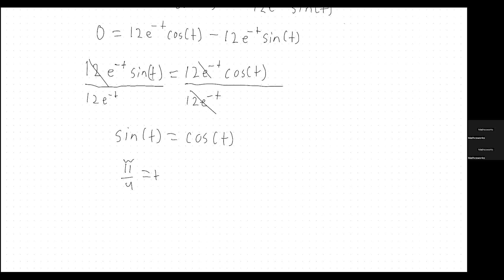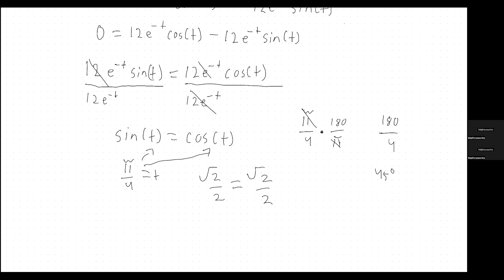So t equals pi over 4. At pi over 4, sine of pi over 4 equals radical 2 over 2, and cosine of pi over 4 equals radical 2 over 2. To verify that pi over 4 equals 45 degrees, multiply pi over 4 by 180 over pi — the pi's cancel, leaving 180 divided by 4, which equals 45 degrees. So the answer is t equals pi over 4.